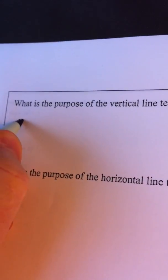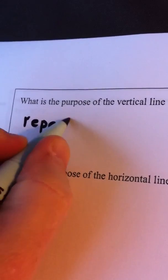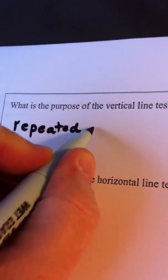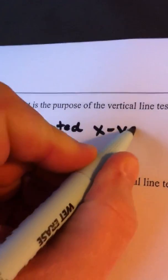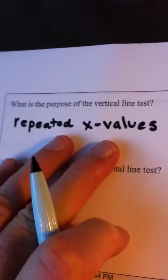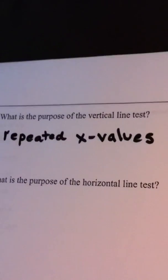The vertical line test checks for repeated x-values. In other words, if a vertical line crosses a graph more than once,